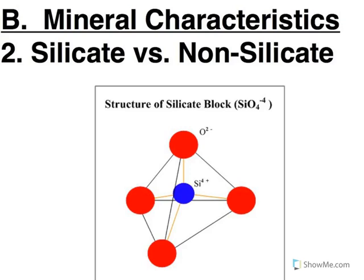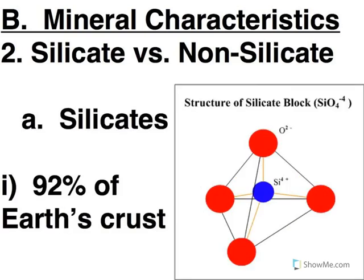When talking about minerals, we can take that very broad category and subdivide it into smaller categories based upon the characteristics of the minerals. One way we can do that is by silicate versus non-silicate. As you can see here, silicates comprise 92% of Earth's crust, so the vast majority of minerals are going to fall into the category of silicates.